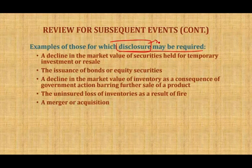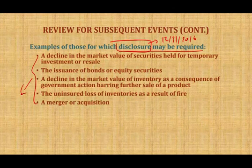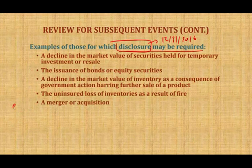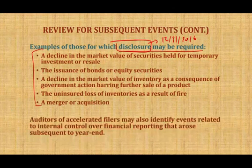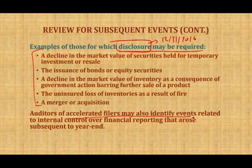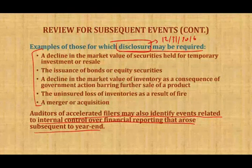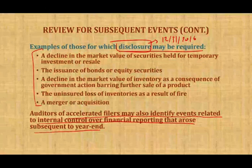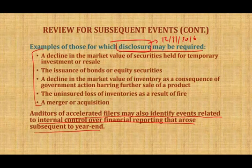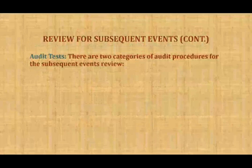These Type 2 events require disclosure for December 31st, 2016, but the actual journal entries will be recorded in 2017 — those journal entries will not affect the 2016 financial statements. Also bear in mind that auditors of accelerated filers may identify events related to internal control over financial reporting that arise subsequent to year-end. If you are a publicly traded company requiring internal control evaluation, anything that happens to internal controls will be considered a subsequent event.